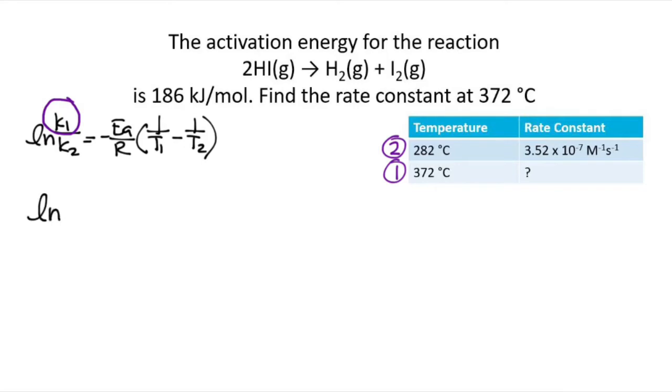So ln of we're looking for K1 divided by K2 is 3.52 times 10 to the minus 7th per molar per second, because it turns out this is a second order reaction, but that doesn't really matter for us. And we're going to go with negative, the activation energy we said is 186 kJ per mole divided by R, 8.314 joules per mole times Kelvin.